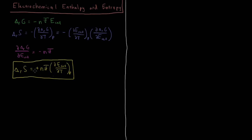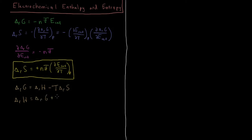So that was straightforward enough — that's our entropy. To get our enthalpy, we recall the definition of Gibbs energy: G equals H minus TS. So delta G of reaction is equal to delta H of reaction minus temperature times delta S of reaction. Solving for H, we get delta H of reaction is equal to delta G of reaction plus T times delta S of reaction.